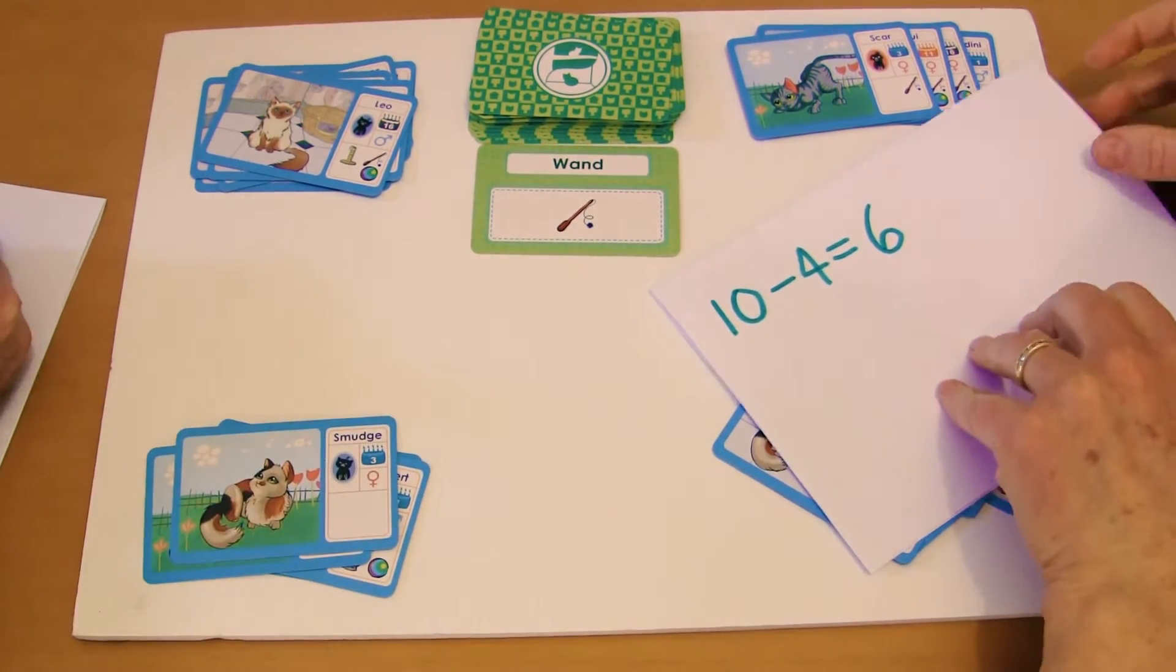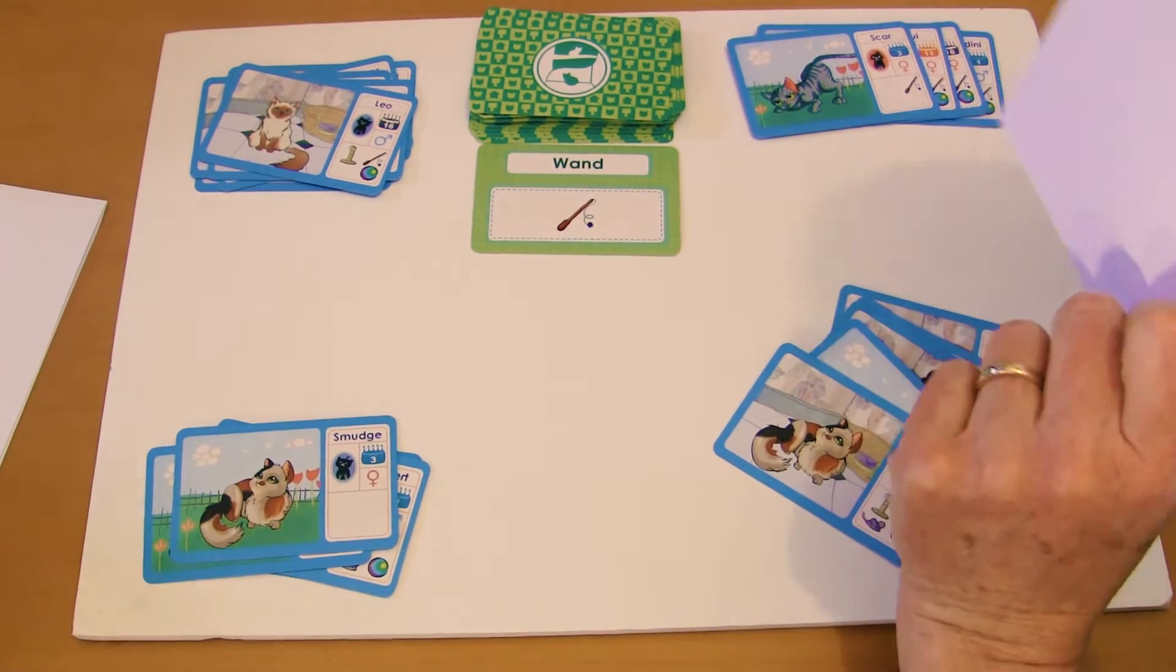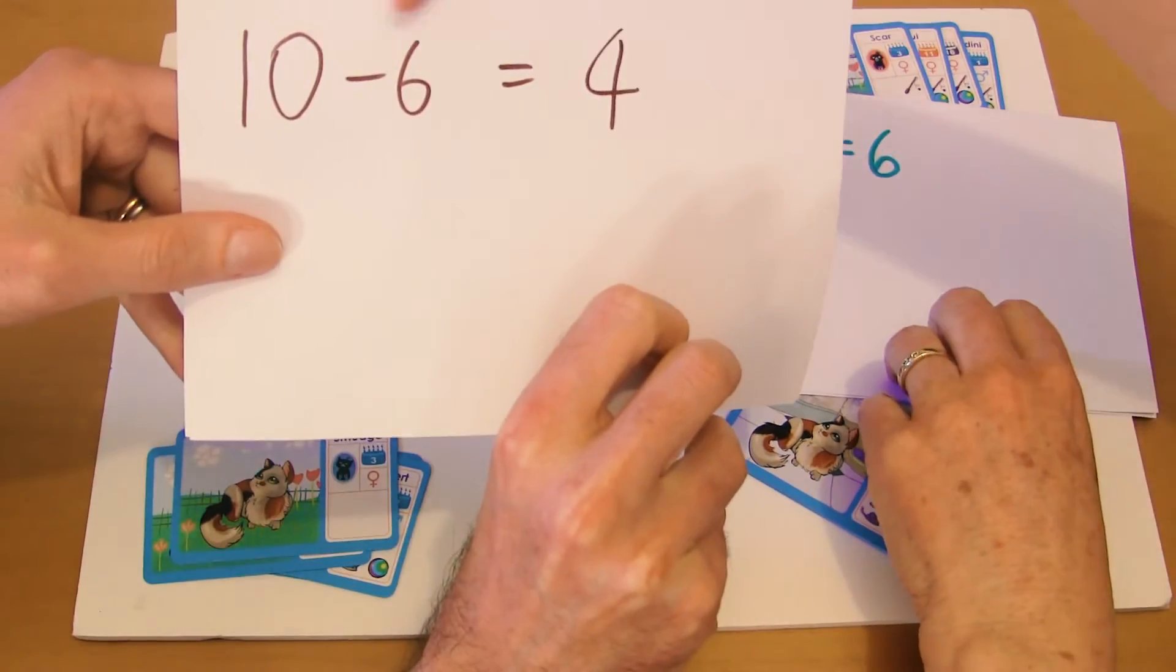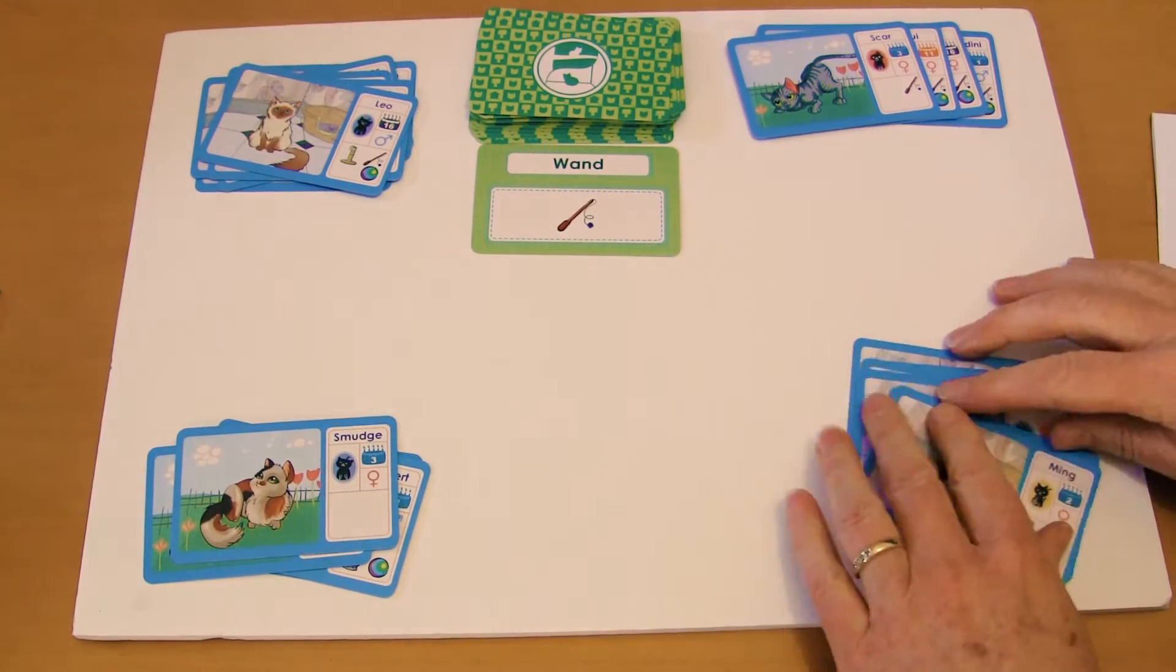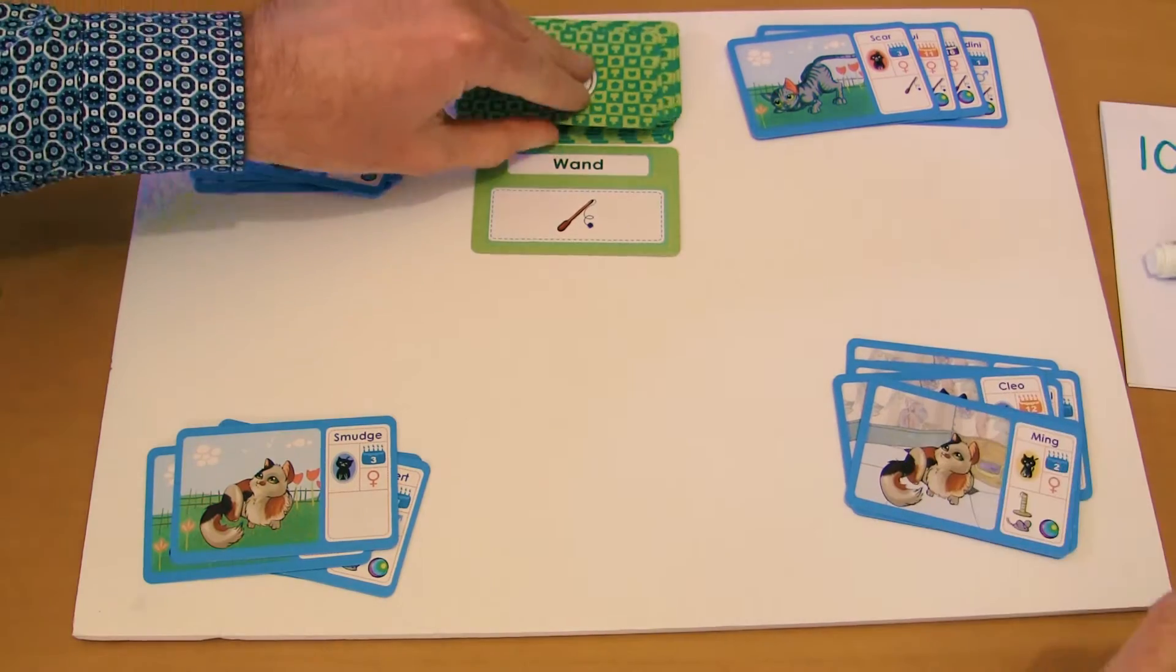And if you're using whiteboards, the children can hold it up and have a look at yours. Whereas my opponent here was 10 minus six equals four. So he's only got four left. This is alarming. Okay, so you can turn over the next one.